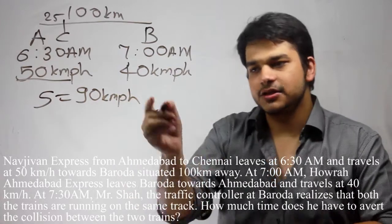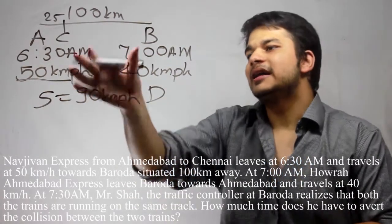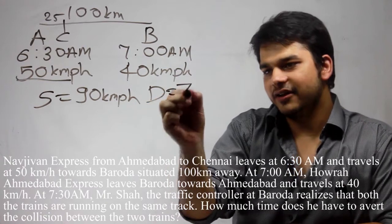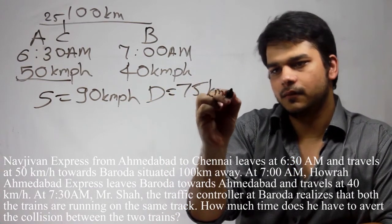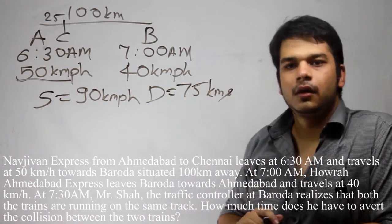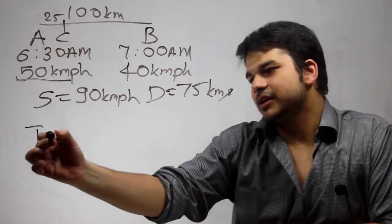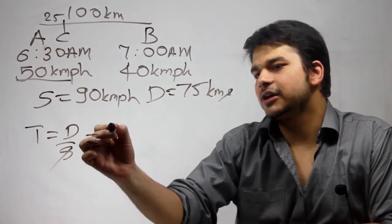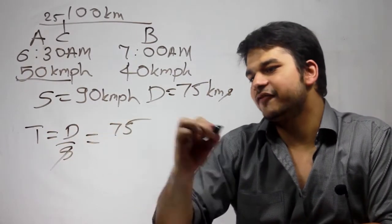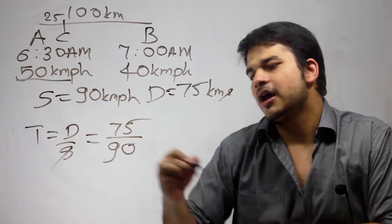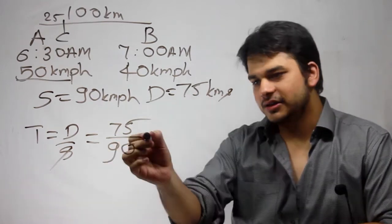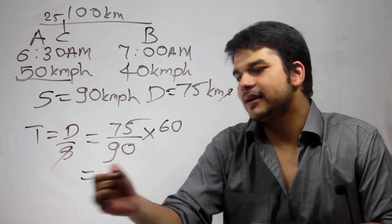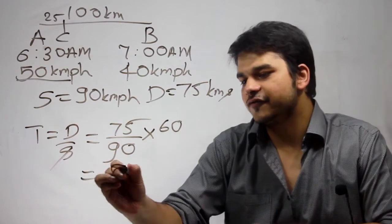The distance between them now is 100 minus 25, that is 75 km. Time is distance divided by speed, which is 75 divided by 90. Multiplying by 60 to convert to minutes gives us 50 minutes.